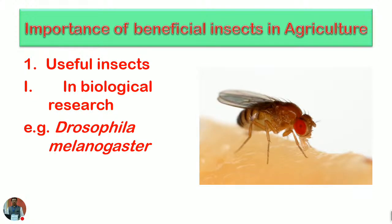The first point under useful insects is biological research, wherein genetic data, behavioral data, and insect activities are studied and inferences are made. Scientists fetch that knowledge, disseminate it, and utilize it to understand new things about living species in the universe.